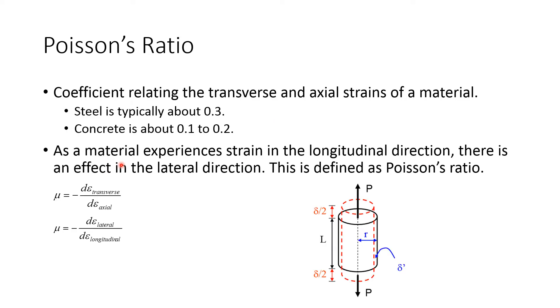So Poisson's ratio. This is just a coefficient that relates the transverse and the axial strains of a material. Typically you'll see steel is about 0.3, and concrete has a lower Poisson's ratio in the 0.1 to 0.2 range, depending on the mixture that you have.